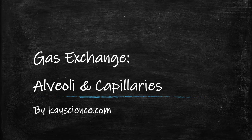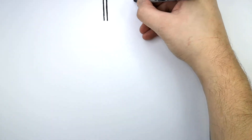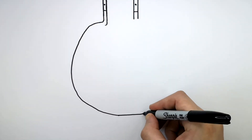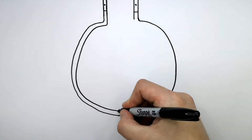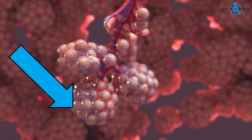Gas exchange in the alveoli and capillaries by kscience.com. These are the bronchioles entering the alveolus. What I'm drawing now is what you might have previously known as an air sac, but this is an alveolus — one alveolus of which we have millions in our lungs. We have many alveoli, and this is to increase the surface area of the gas exchange surface in the lungs.